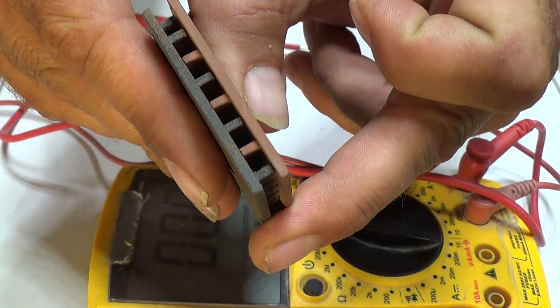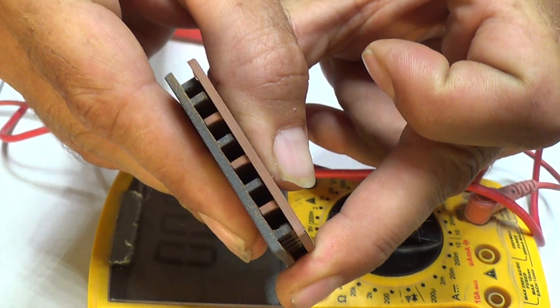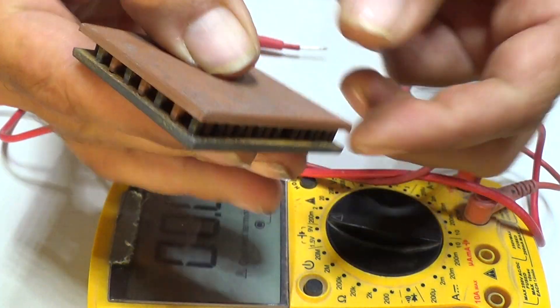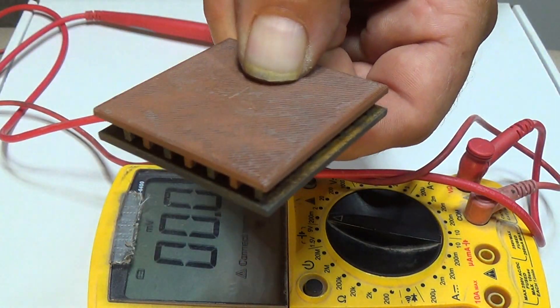So we're going to press those back together. We'll rub them back and forth a little bit so they get a good connection between them. We're going to squeeze that to make sure they have a good junction.